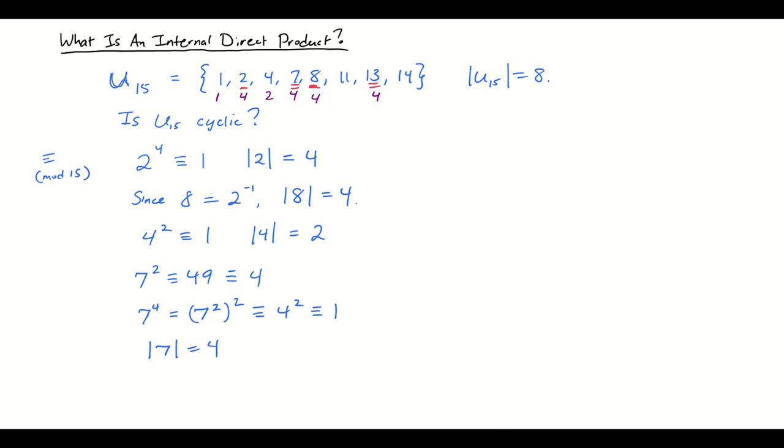So the order of 13 will also be 4. That leaves 11 and 14. 14 is not so hard to check out because 14 is congruent to negative 1. So 14 squared is going to be congruent to 1. So that means that 14 will also have order 2. And finally what about 11? 11 squared is 121, and 121 is also 1 mod 15. So 11 has order 2.